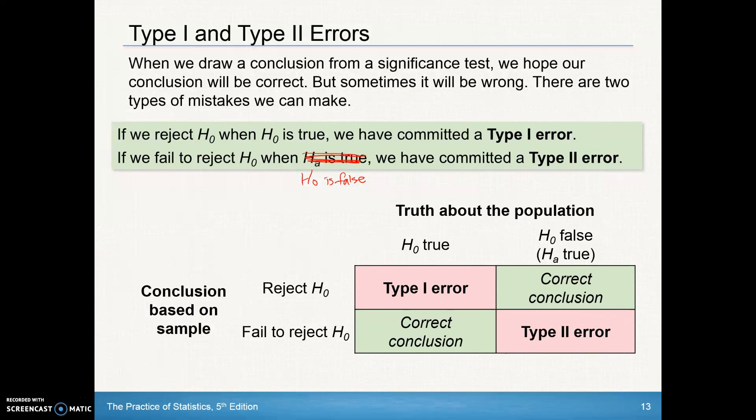There's another way to display this. There's a little two-way table. Here's the truth about the population. This is really what's true. And this is our conclusion based on our sample.